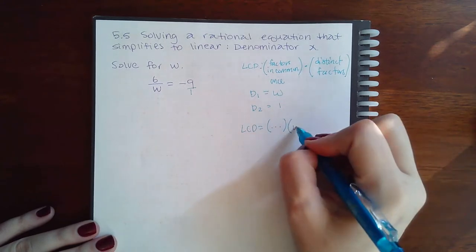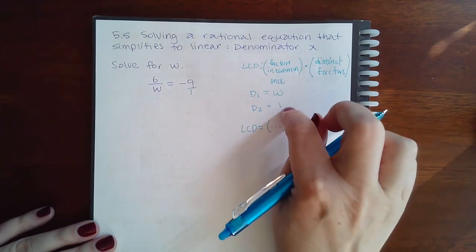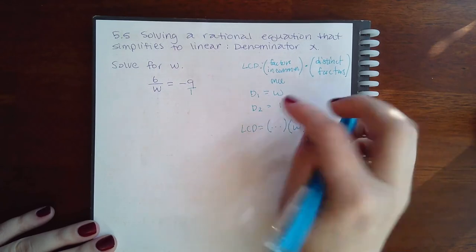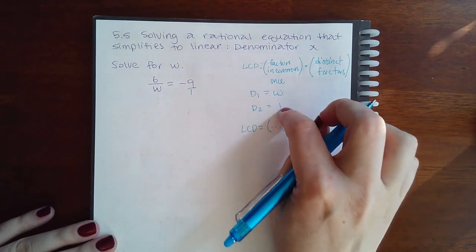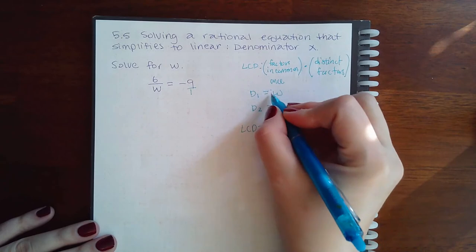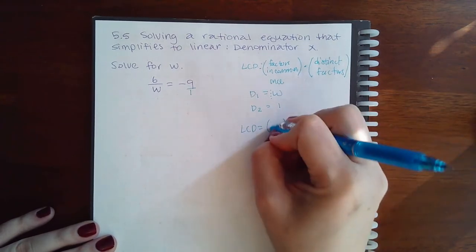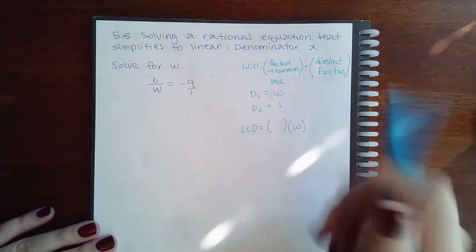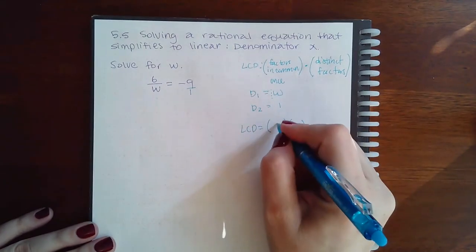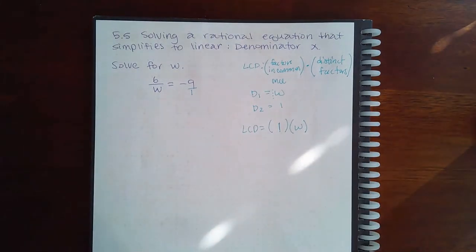The first denominator has a factor of w, which is different from the second denominator. And the second denominator, I guess they really do have a 1 in common, don't they? Because that has a 1 coefficient. So I shouldn't say they don't have anything in common. They actually have that 1 in common. But I don't have to list it twice, only once.